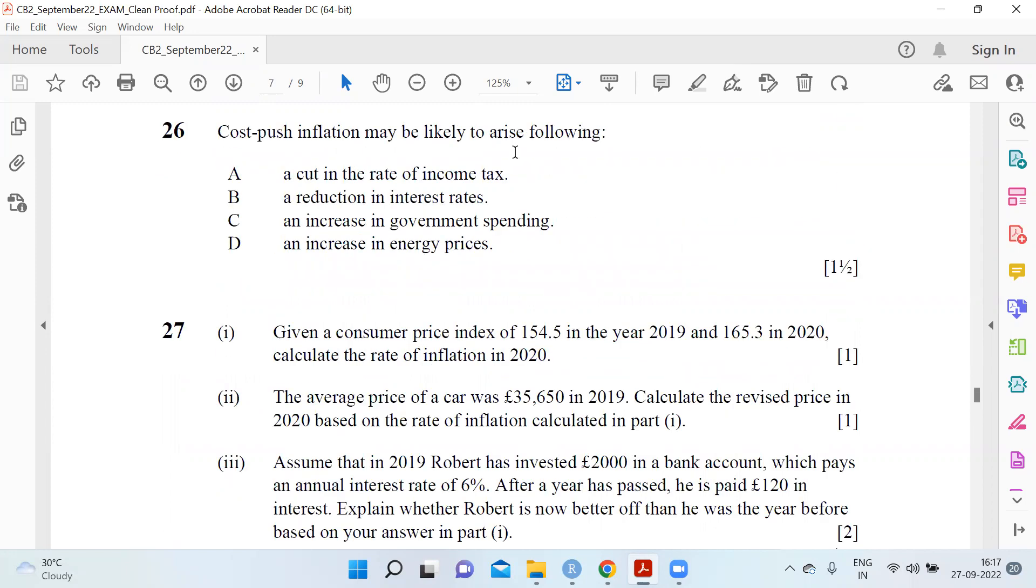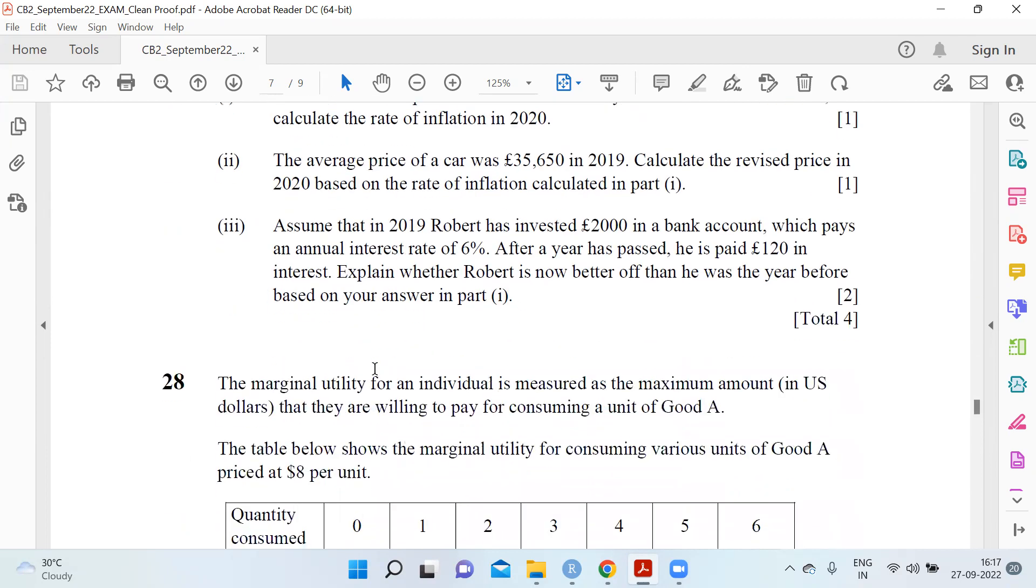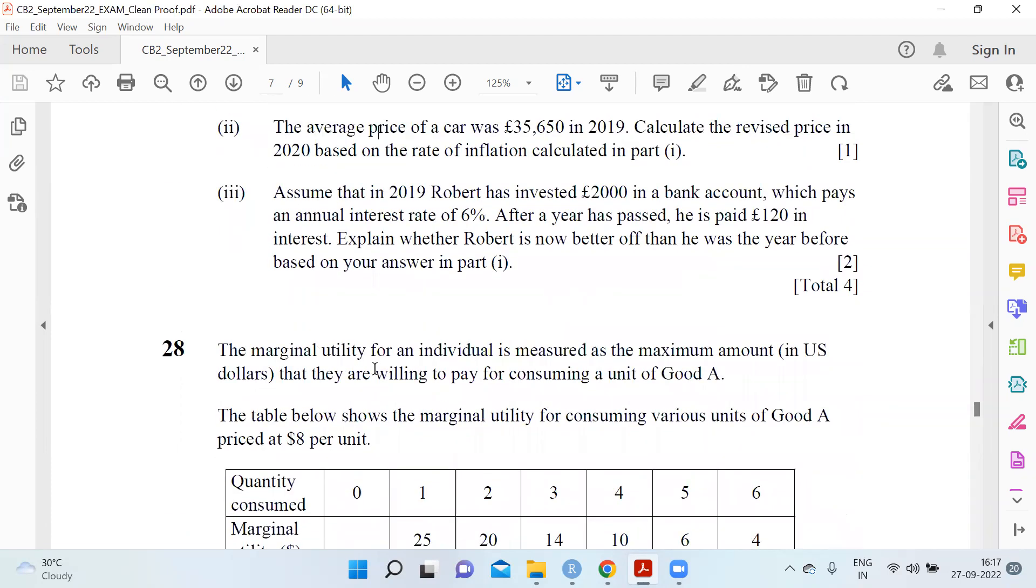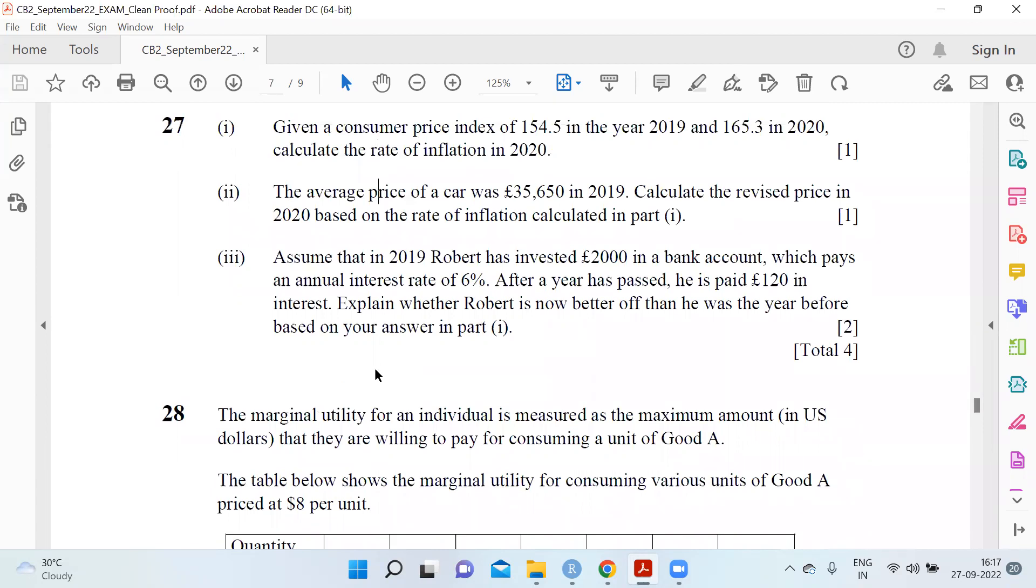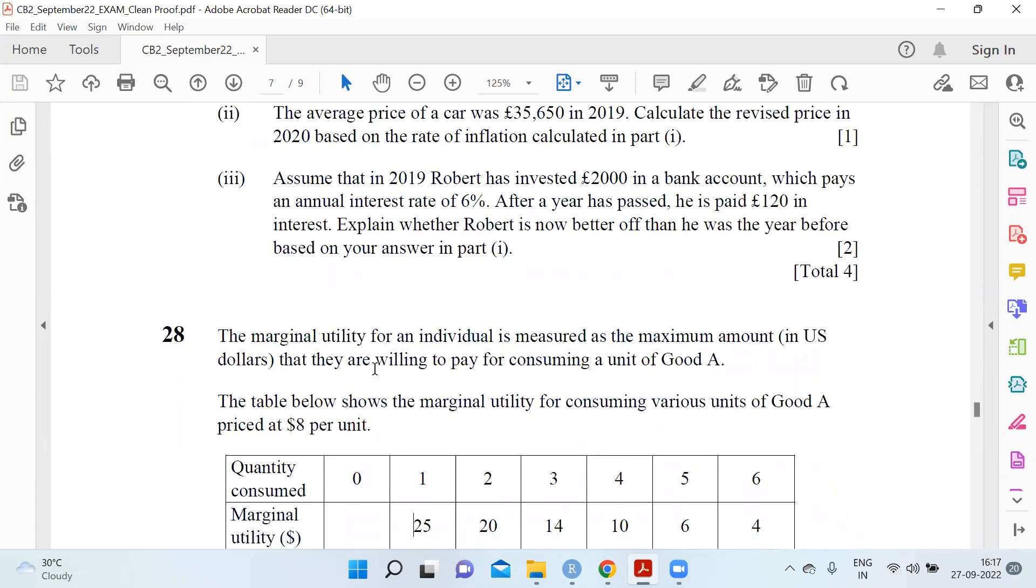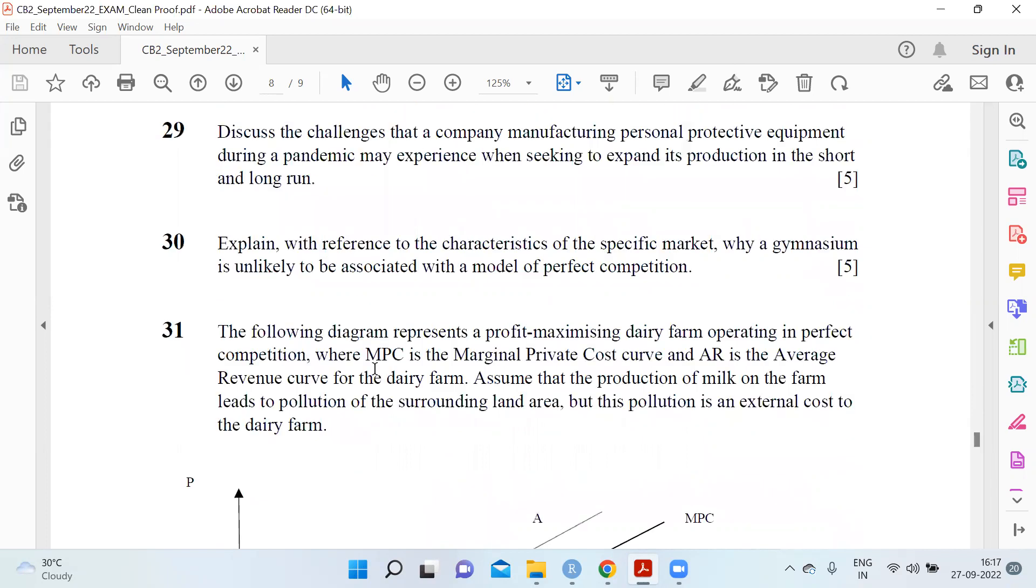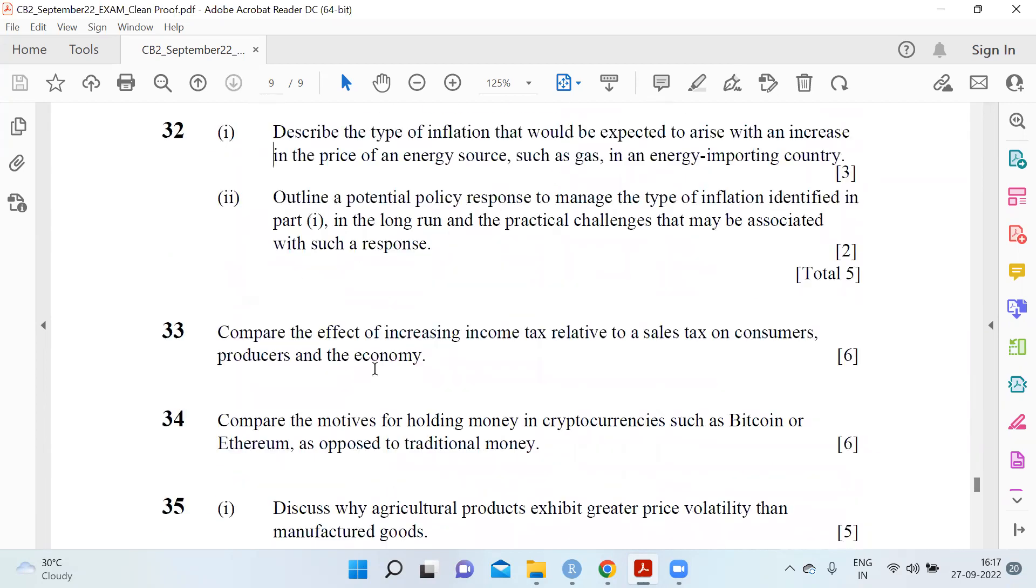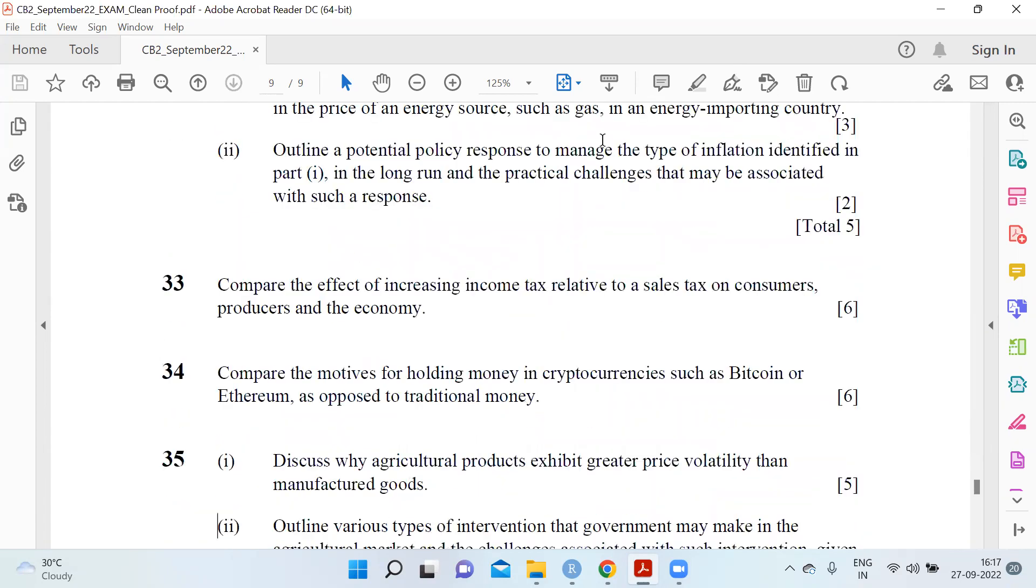Cost-push inflation may be likely to arise due to an increase in energy prices. That's it. The paper was very easy this time for CB2. Even the long questions were very direct and they had a lot of calculations. When sums are there, you can easily score. There was also a graph-based question which is easier to write than the others. That's it, thank you.